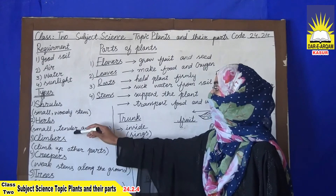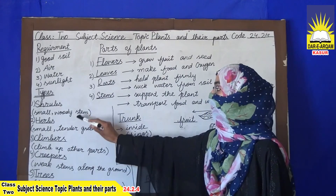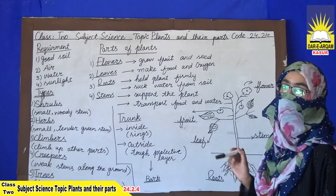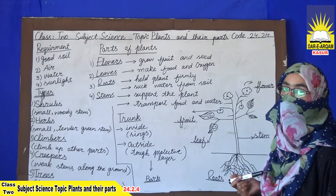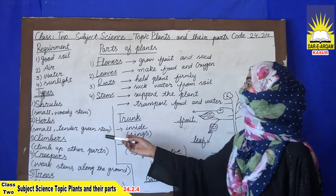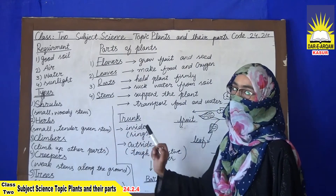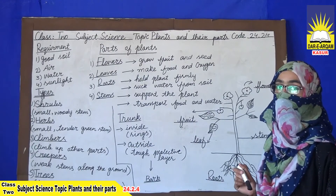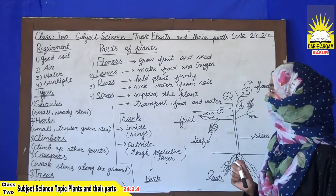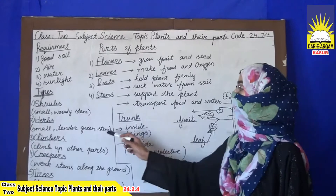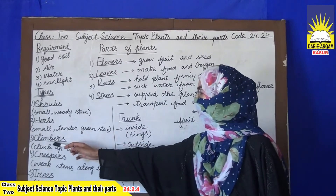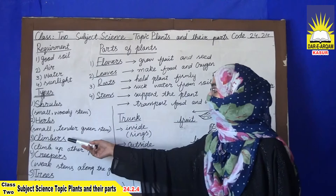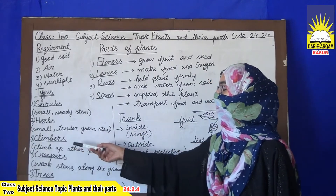Herbs are also small plants, but the difference is that they have tender green stems, unlike the woody stems of shrubs. Examples include coriander, millet, and grass. Herbs are very aromatic — aromatic means they have fragrance — and they are used to flavor foods.